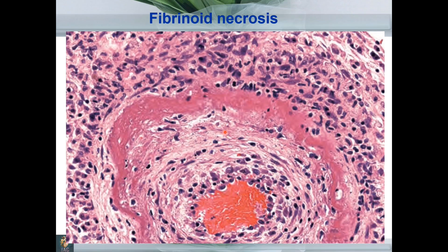This slide shows arterial tissue. You can see a prominent pink rim in the histological section. This pink deposition is the hallmark for fibrinoid necrosis. Again, there is loss of cellular and nuclear details along with deposition of inflammatory infiltrate, and this pink-colored tissue is indicative of fibrinoid necrosis.